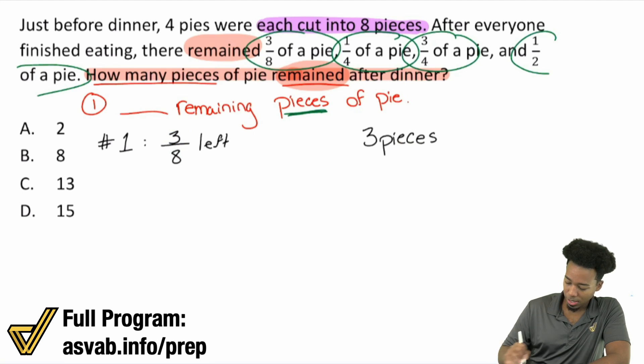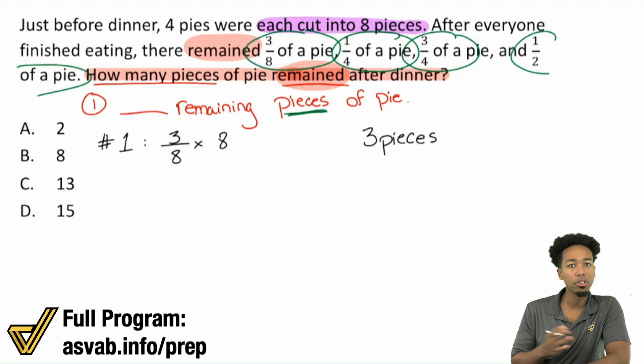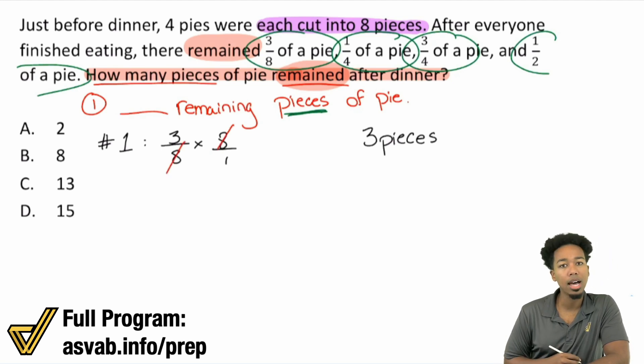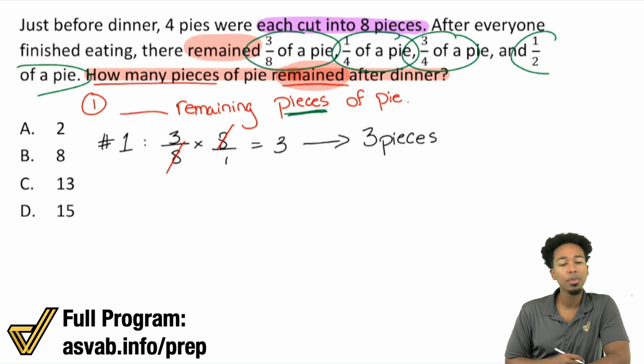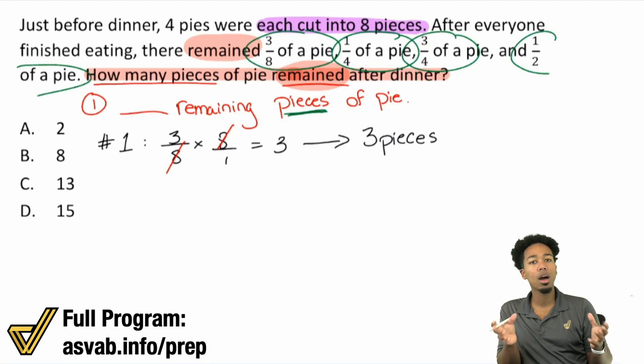And if that doesn't make sense, here's what you can do. If the first pie says we have 3 eighths left, what is 3 eighths of 8? Let's multiply it. The fraction times the whole. 3 eighths times 8, what's that going to give us? Well, if we write that over 1, look at what we have. The 8ths cancel out and we're just left with 3, which is 3 pieces.